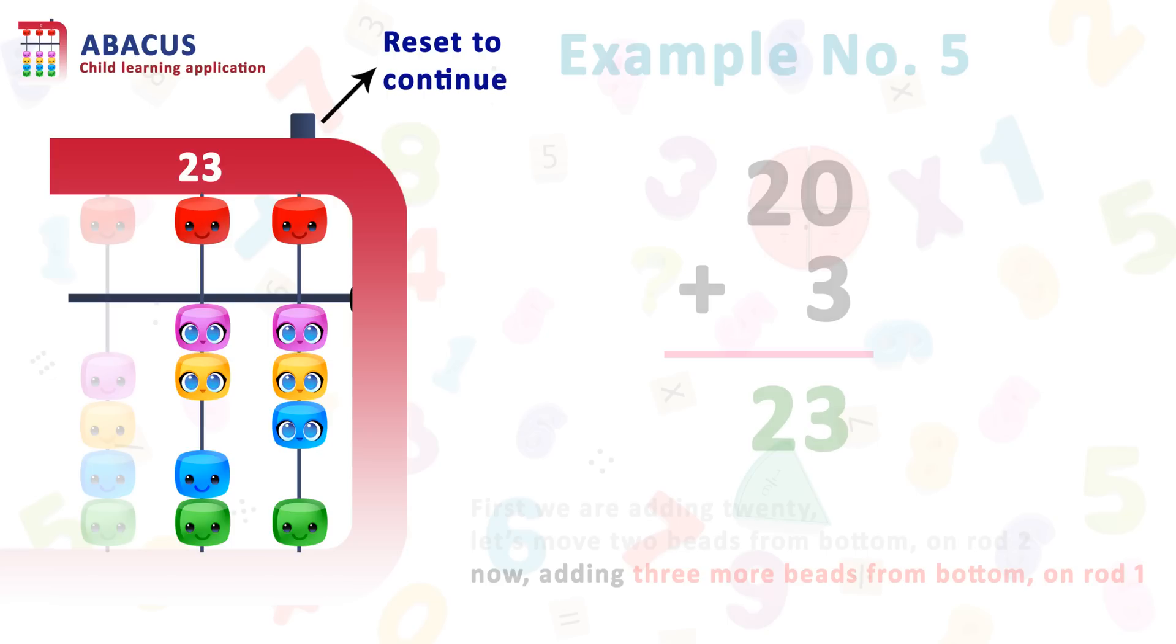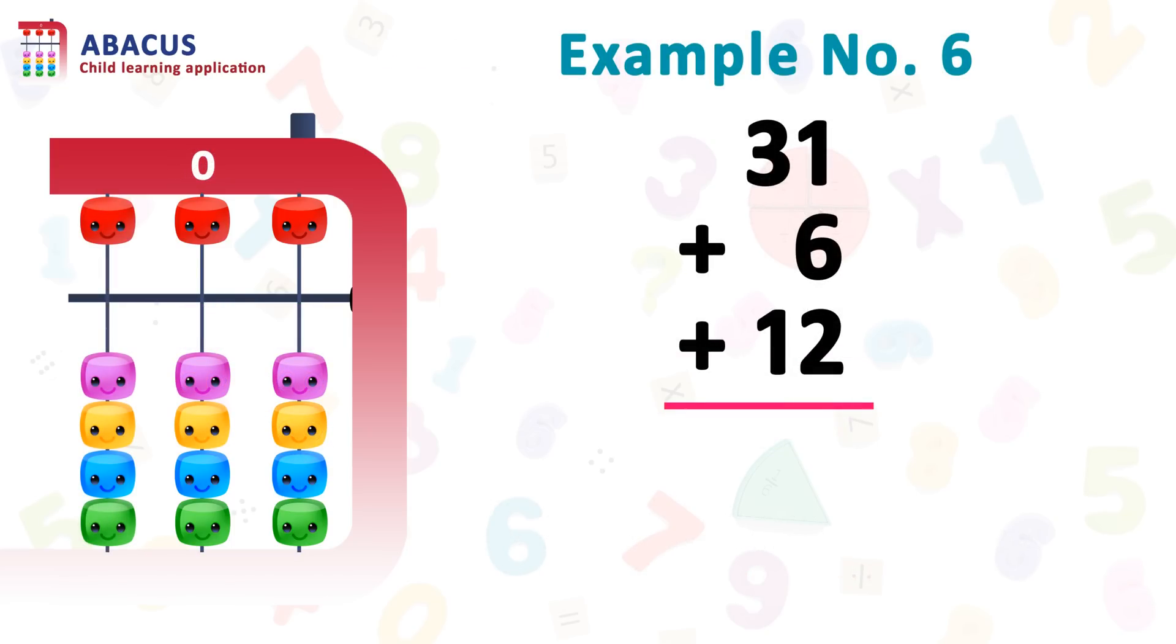Let's reset and go to the next example. Here is example number 6: 31 plus 6 plus 12. I repeat, 31 plus 6 plus 12. So first, we are adding 31, then adding 6, and then 12.